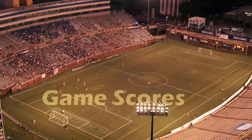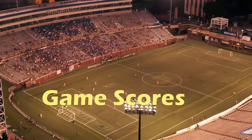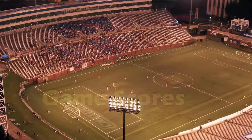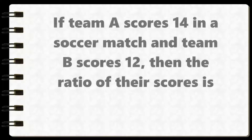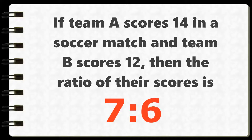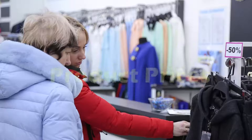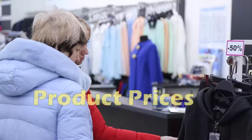Game scores: if Team A scores 14 in a soccer match and Team B scores 12, then the ratio of their scores is 7 to 6.